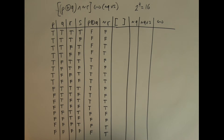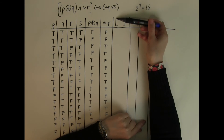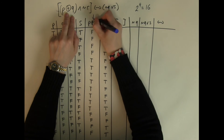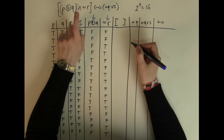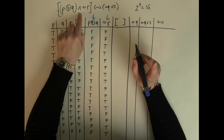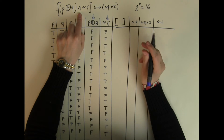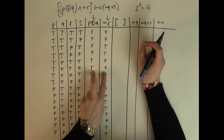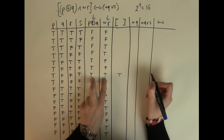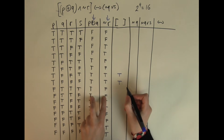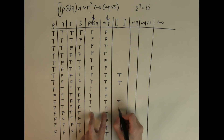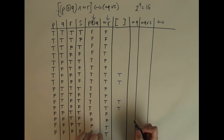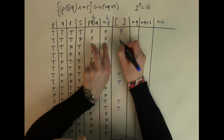Now I need to calculate what is inside the square bracket, combining the XOR and NOT R columns using the AND operation. AND is only true if both of them are true. Going through the rows: both true gives true, both true gives true, and so on for the matching trues. The rest — where inputs are different or both false — all give false.